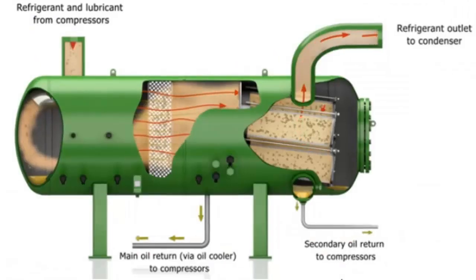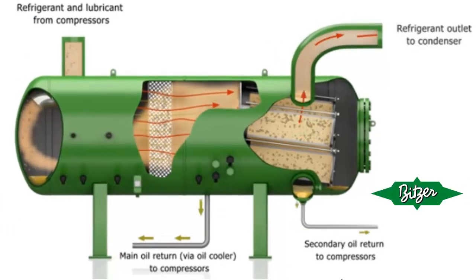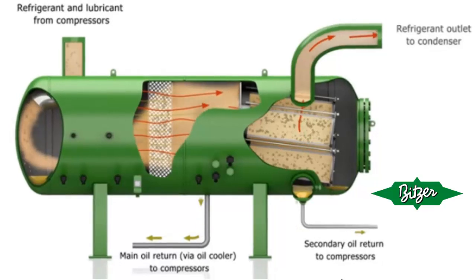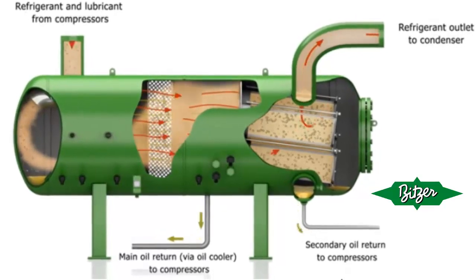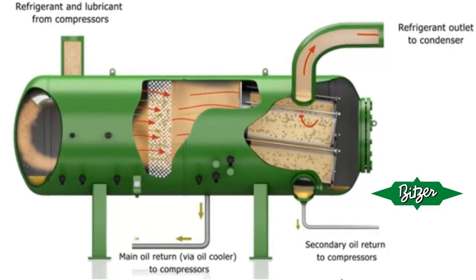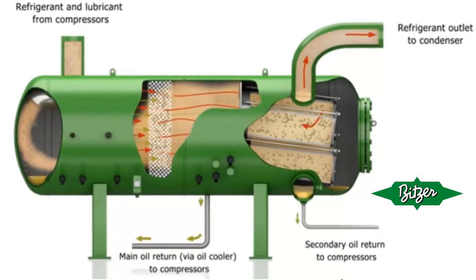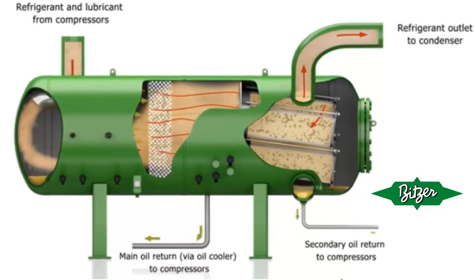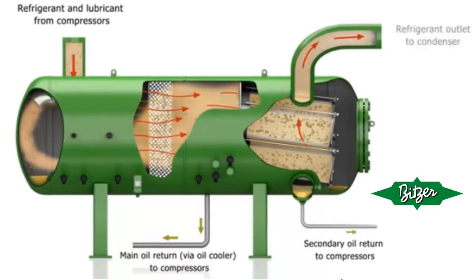Oil Separator. Inside the separator, oil particles undergo a change in direction and a decrease in speed, causing larger oil particles to leave the refrigerant and fall to the bottom of the separator. On the other hand, small oil particles impact the internal fibers of the separator's internal filter, merging into larger oil drops that can then be collected more easily.